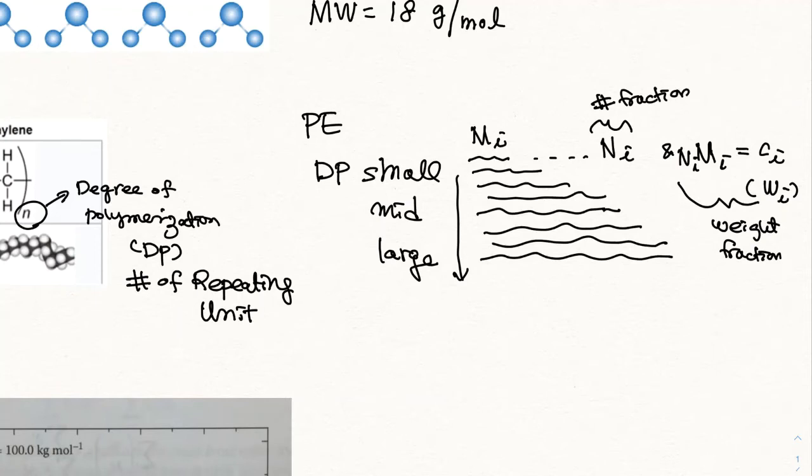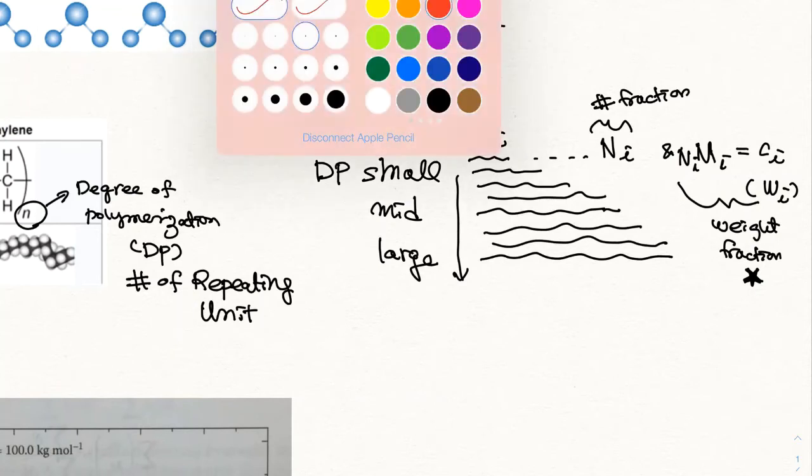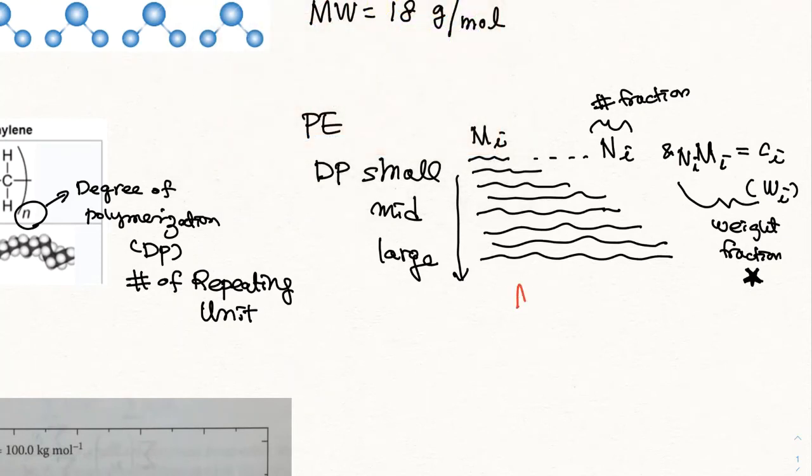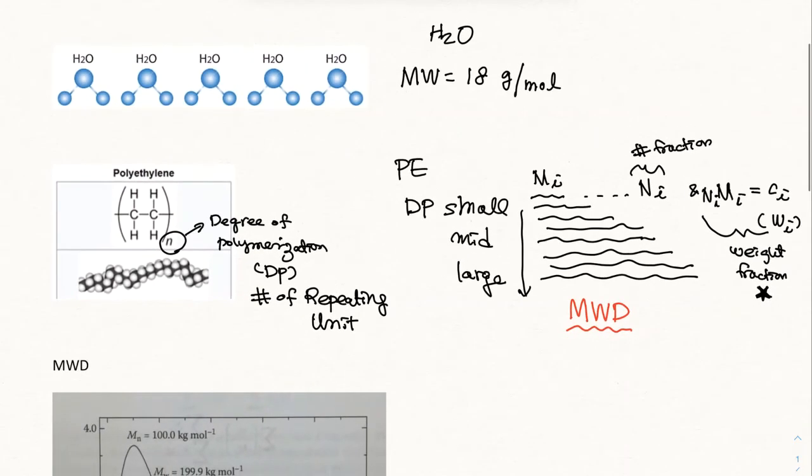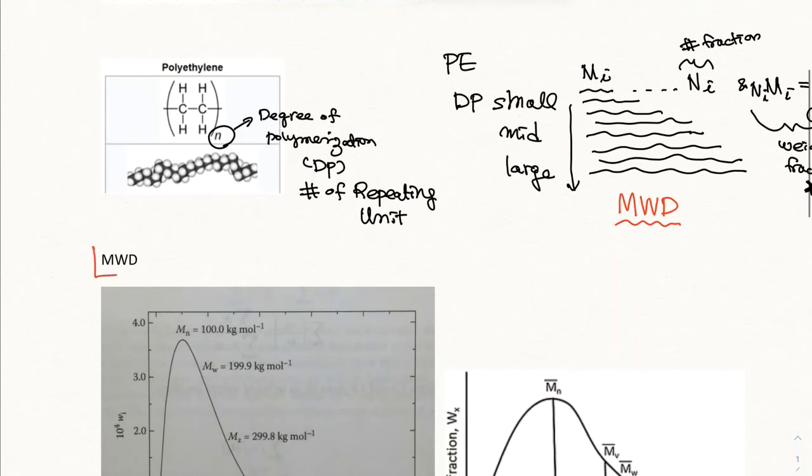There are different experimental techniques that allow us to measure the number fraction versus weight fraction. And typically, weight fraction is what people experiment, it can be easy to find out. But the whole point of this small lecture is that polymers have a molecular weight distribution, and this is something that you need to have that concept. So what's the consequences of molecular weight distribution?